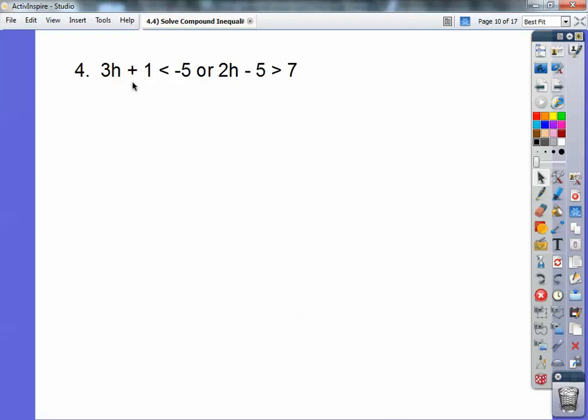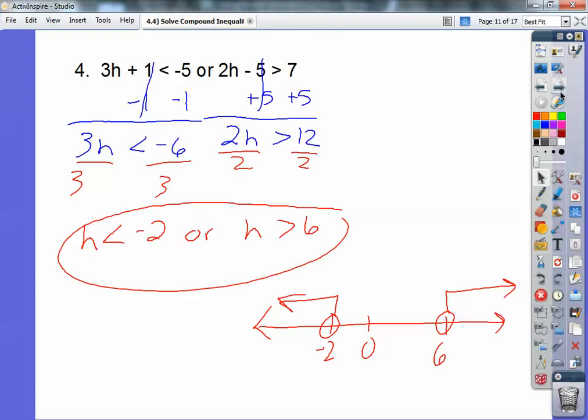Okay, so here we're going to solve them separately. I'm going to go minus one, minus one, and here I'm going to go plus five, plus five, and then take off from there. All right, so here we go. So 3h, the ones cancel. Negative 5 plus 1 is negative 6. And then over here, 7 plus 5 is 12.